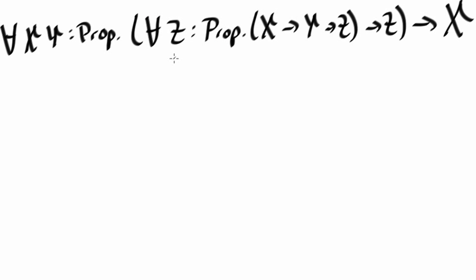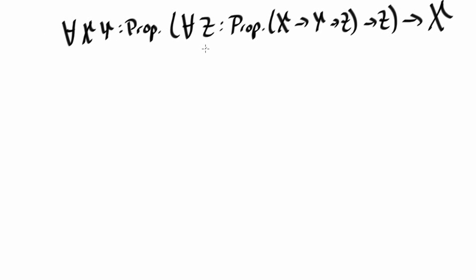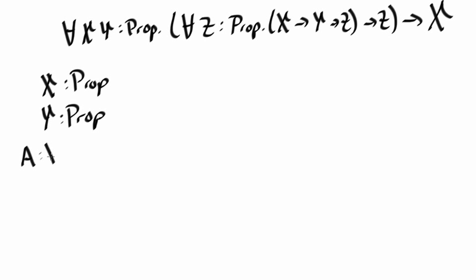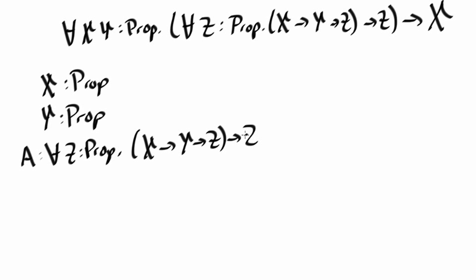So let's try and prove the theorem. We start by assuming a proposition x, a proposition y, and an assumption a which is a proof of: for all z in prop, x implies y implies z implies z. The claim we need to prove is x.